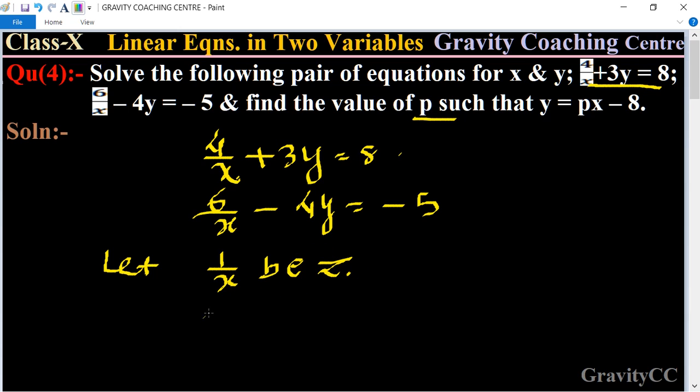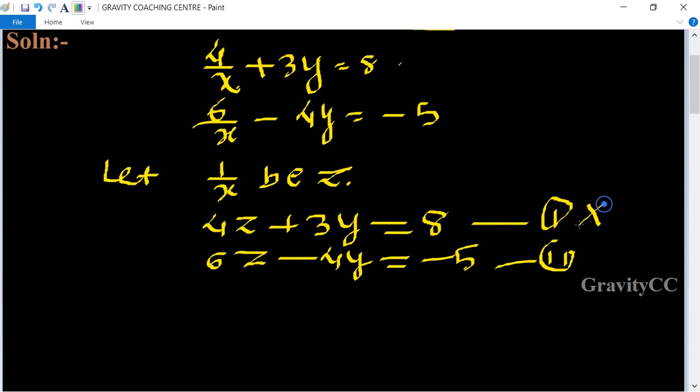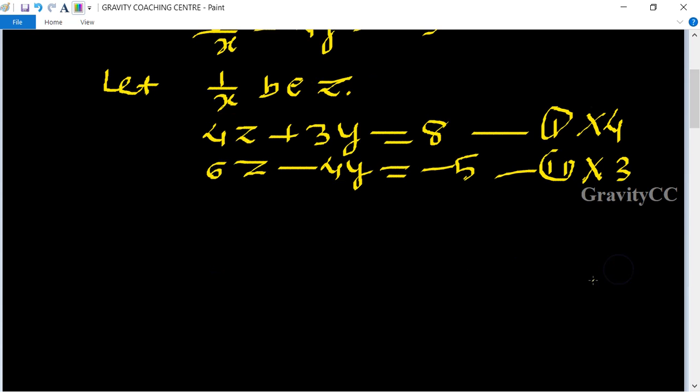It will become 4z + 3y = 8 and 6z - 4y = -5. Suppose this is equation 1 and this is equation 2. Now, multiplying the first equation by 4 and the second equation by 3, then adding the equations.